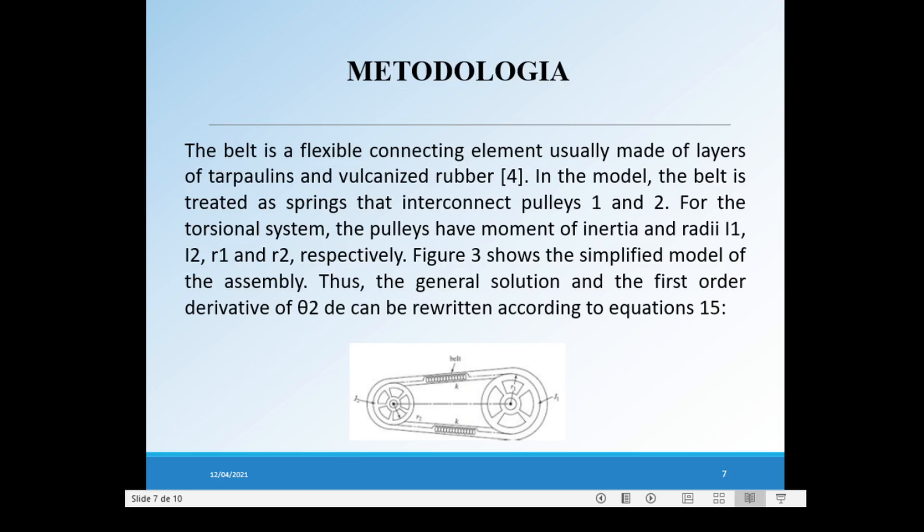Our methodology: the belt is a flexible connecting element, usually made of layers of tarpaulins and vulcanized rubber. In the model, the belt is treated as springs that interconnect pulleys 1 and 2. For the torsional system, the pulleys have moment of inertia and gradient of inertia. Figure 3 shows the simplified model of the assembly.